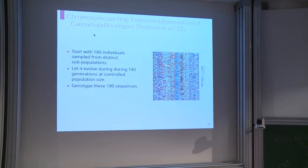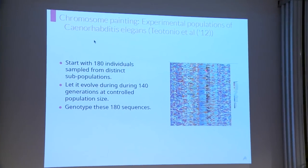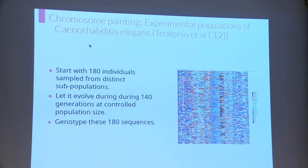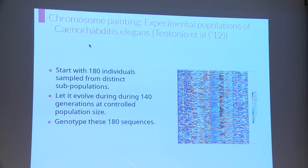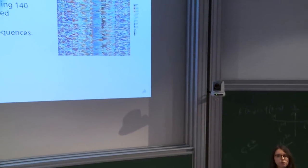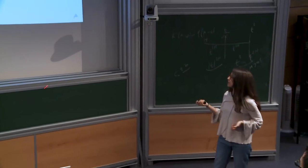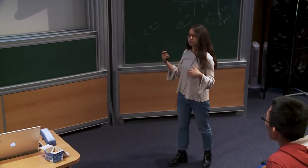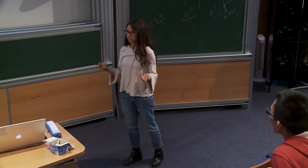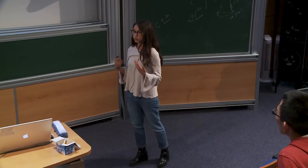Each fragment of chromosome has been inherited from one of the ancestors in generation zero. After 140 generations, he genotyped all the individuals in the population. Each horizontal line is real data corresponding to one individual's chromosome, and each color represents one ancestor. We want to study this mosaic of colors because it may be informative — for example, if some colors are more present than others, this may mean that some individual in generation zero was fitter than the others and had more progeny.